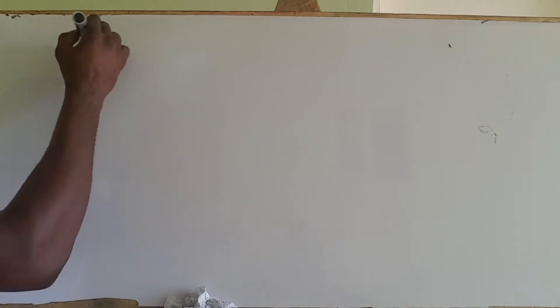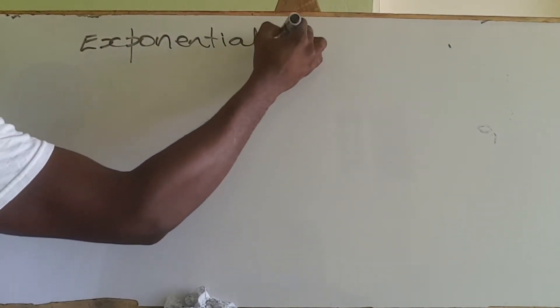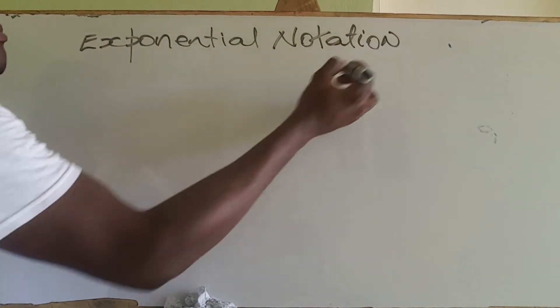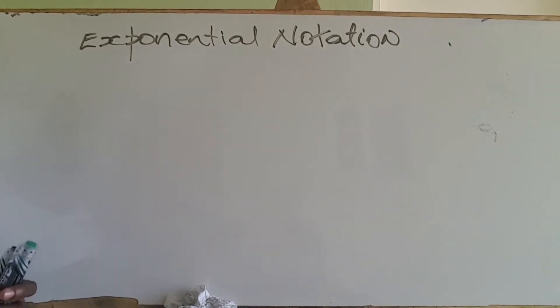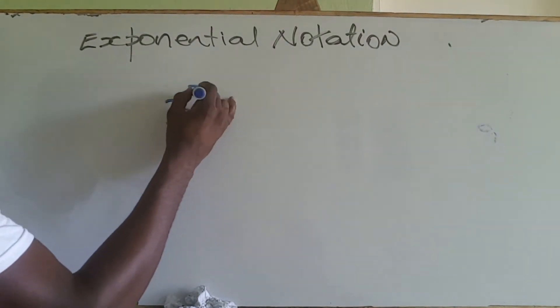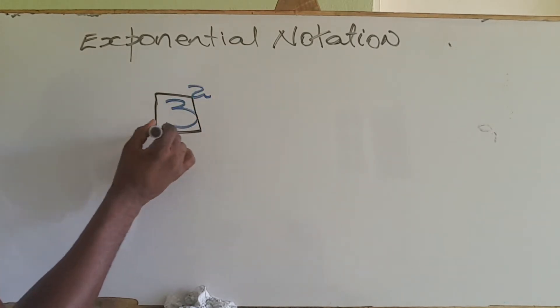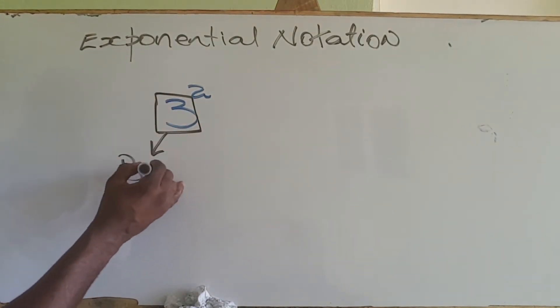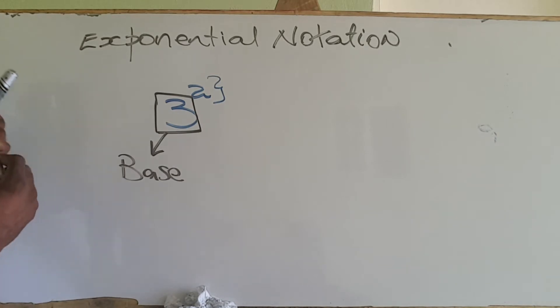What we're looking at this time is writing numbers in exponential notation. In order to understand exponential notation, firstly we must understand that when we see numbers written like this — for example, 3 raised to the second — we need to understand that this part we call the base and this part is the exponent.